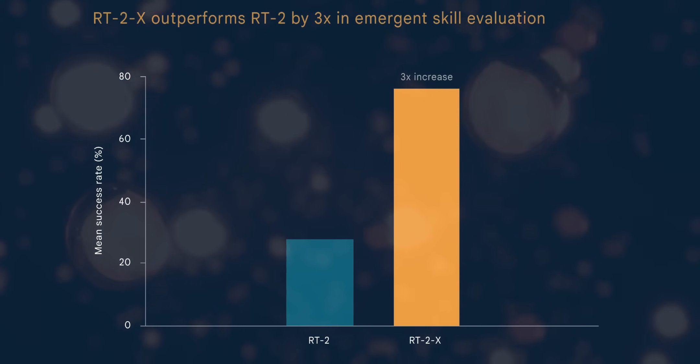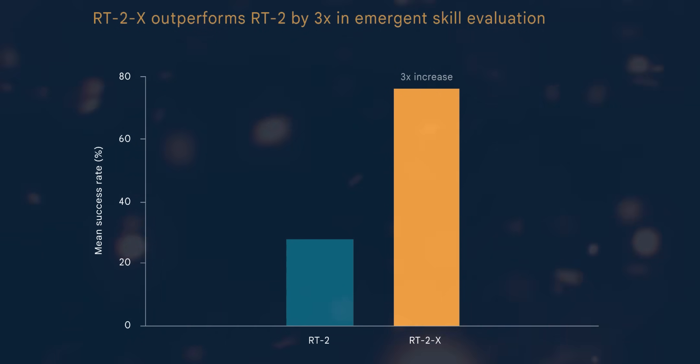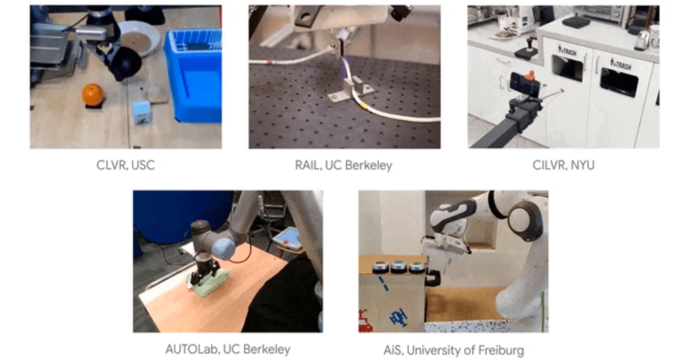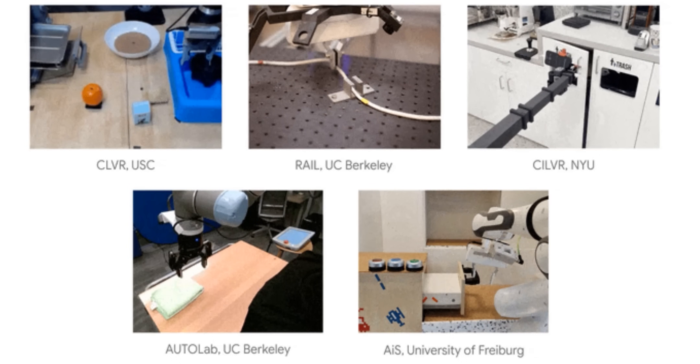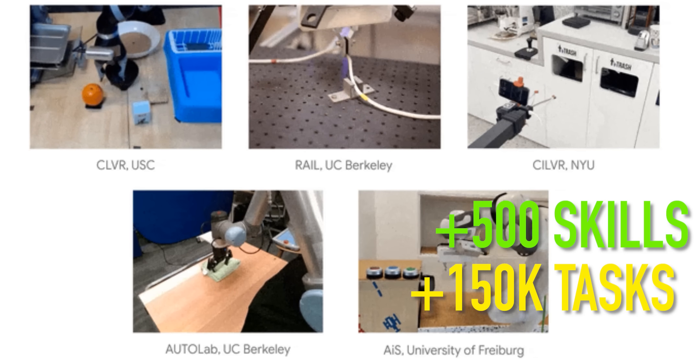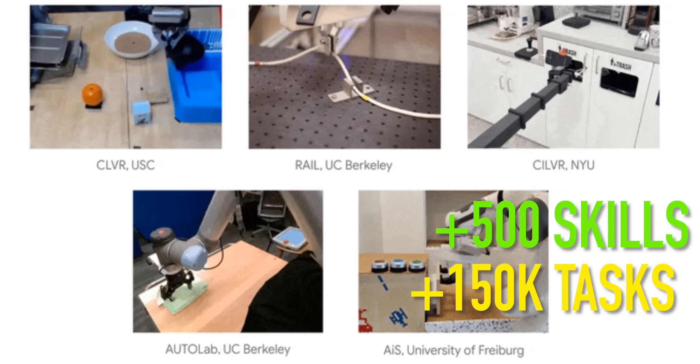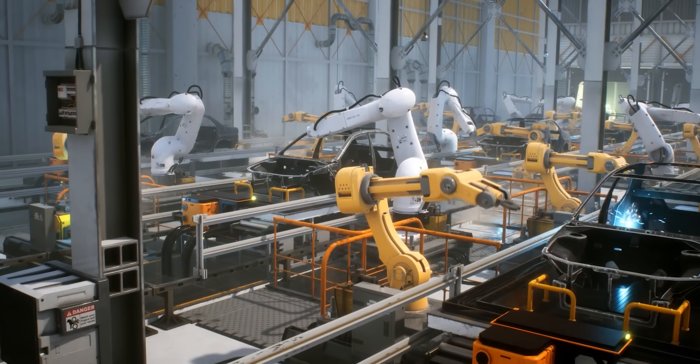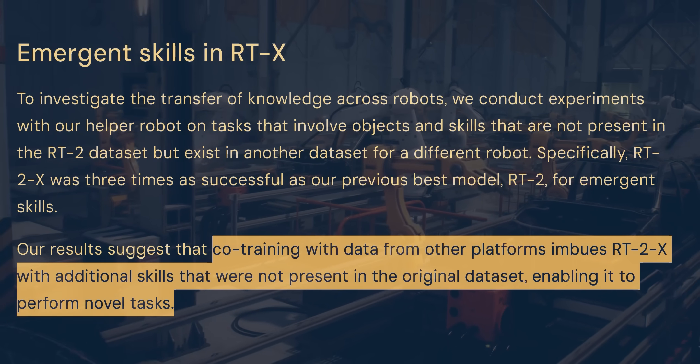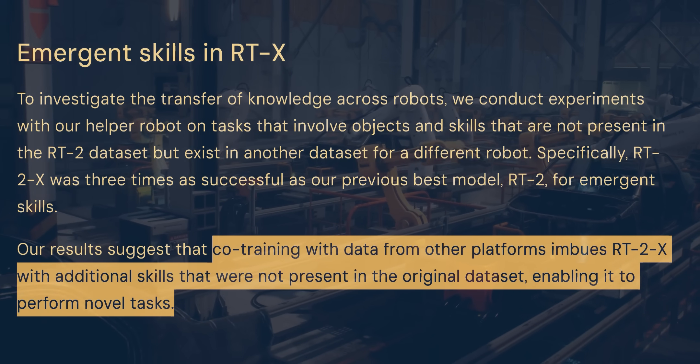Check out what happens when you take a robot running on RT2 and just retrain it using DeepMind's OpenX dataset without making any changes to the underlying AI model. RT2X performs three times better than RT2 when it comes to emergent skills for robots. Emergent skills are tasks that involve objects and movements that are not present in the original RT2 dataset, but do exist in another dataset for a completely different robot. So, the big breakthrough here is that training an AI model with data from completely different kinds of robots can give any robot new skills that let it perform completely new kinds of tasks.